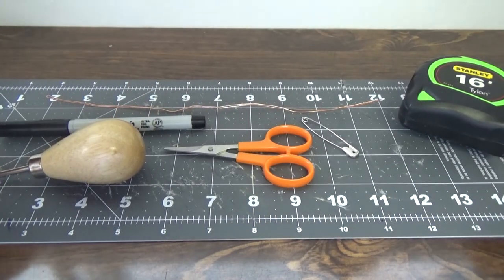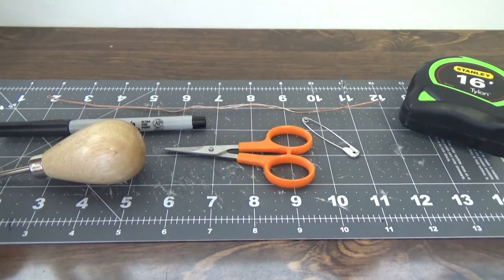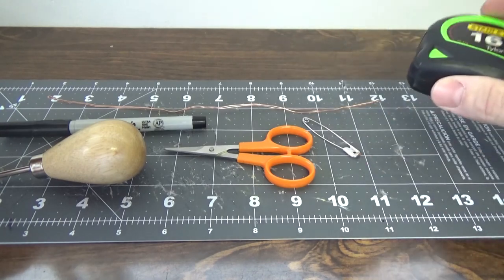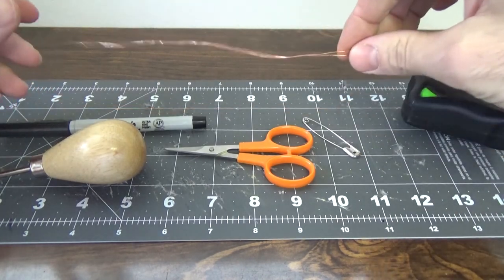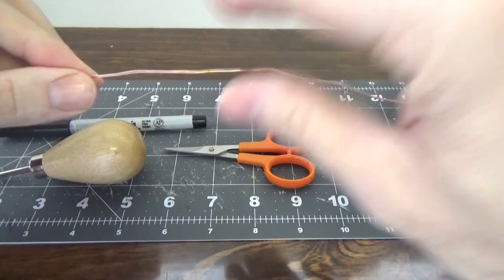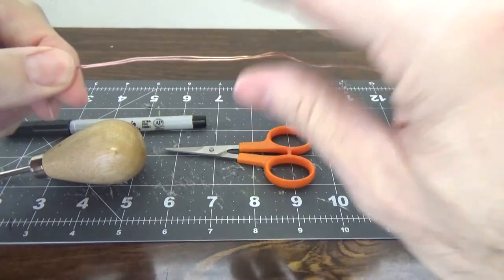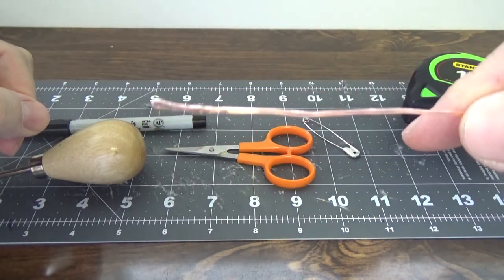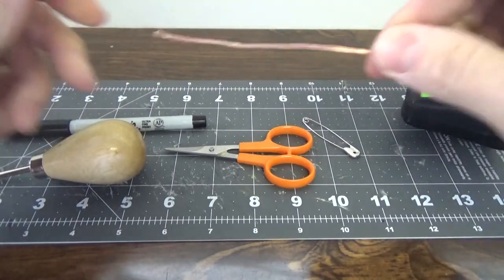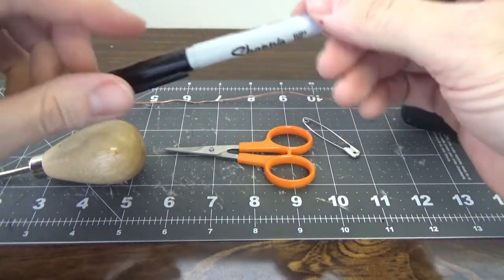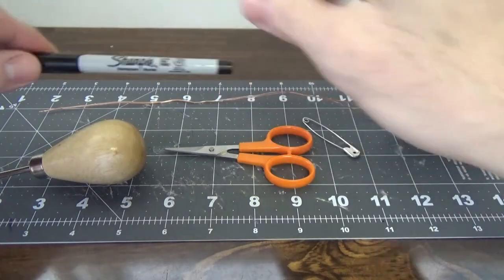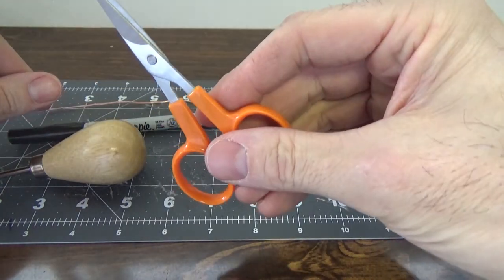All right, so here's how we build our soft shackles. These are the tools that you're going to need. You're going to need a tape measure, some form of a fish tool. This is a piece of thermostat wire that I just have bent in half and has an eye at one end. Makes it good for sticking inside of the cordage. You need a marker to mark a couple points along the cord, and a pair of scissors.